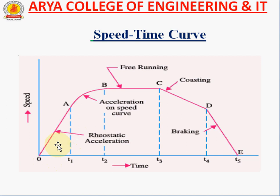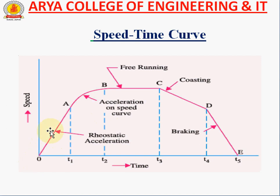From the general traction viewpoint, we see in this diagram a graph of the speed-time curve. There are many points: starting point O, then A, B, C, D, and E. When we give supply to the motor by rheostatic acceleration, the train goes from O to A, and the time taken is T1. This phase is called rheostatic acceleration.